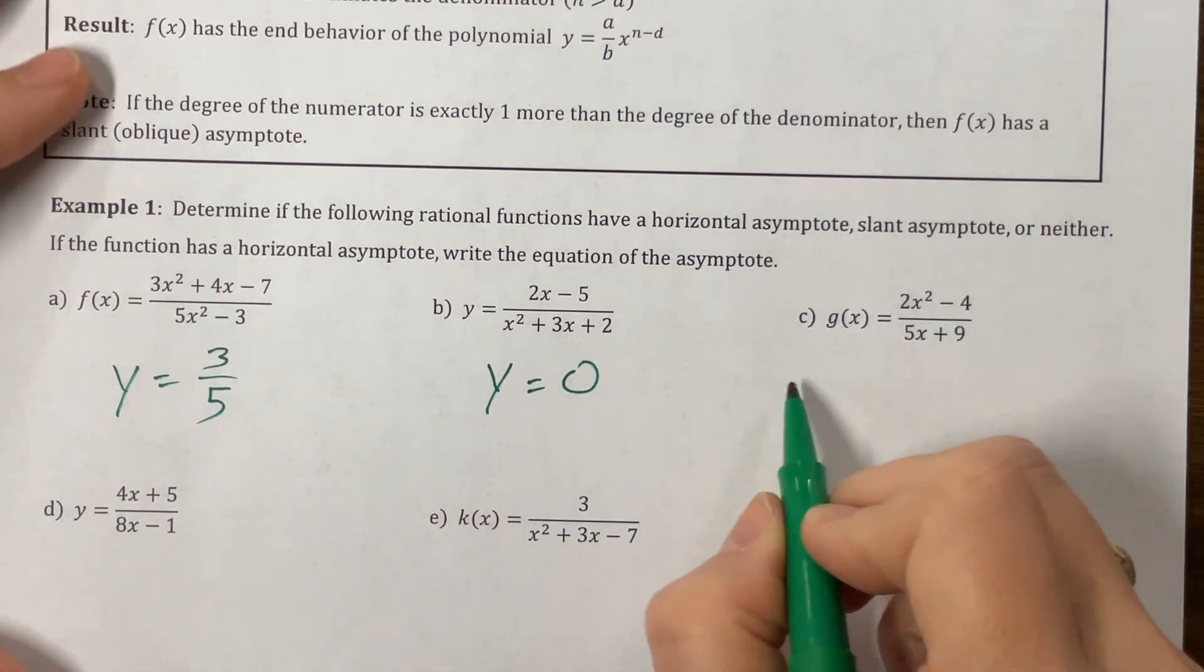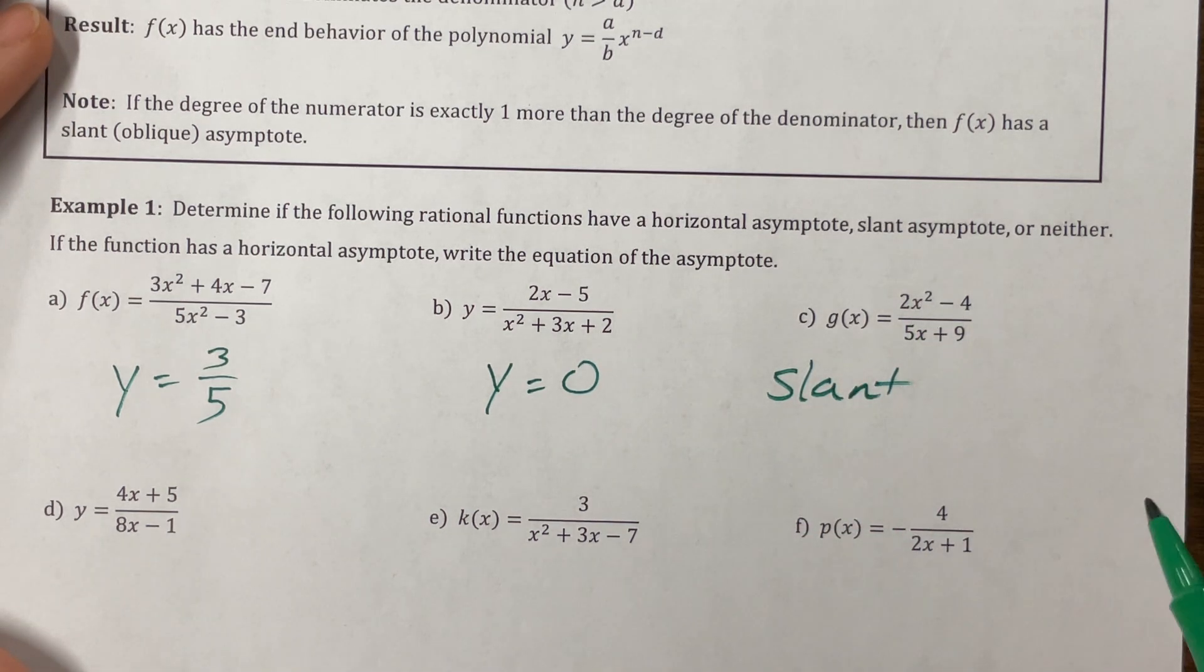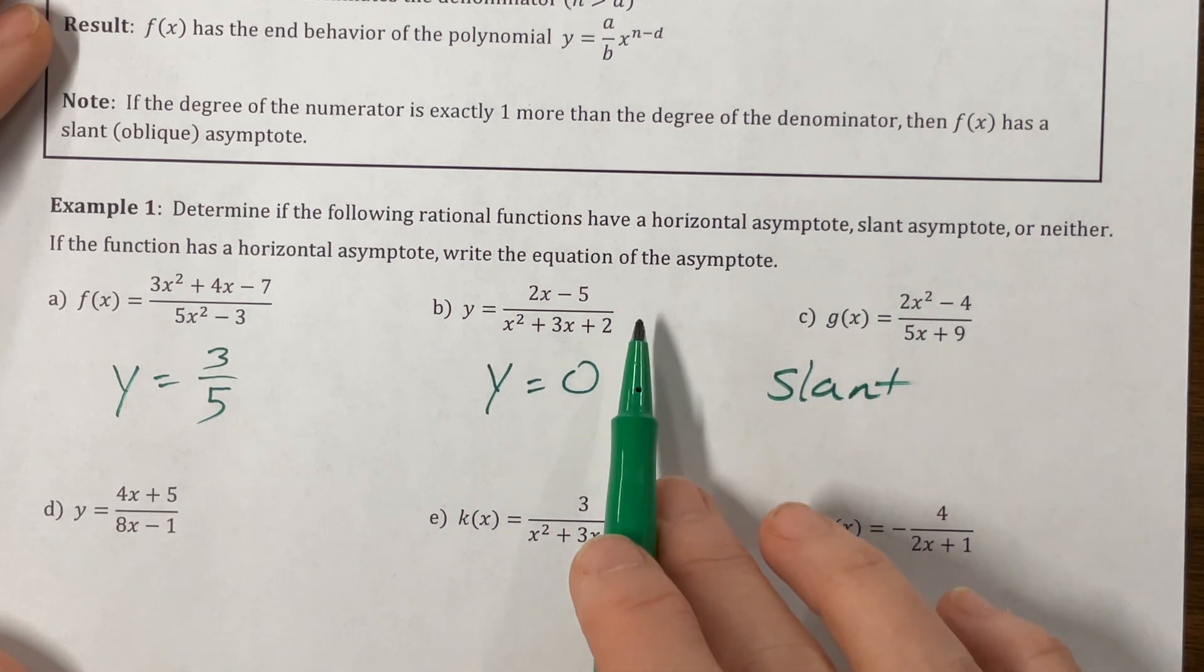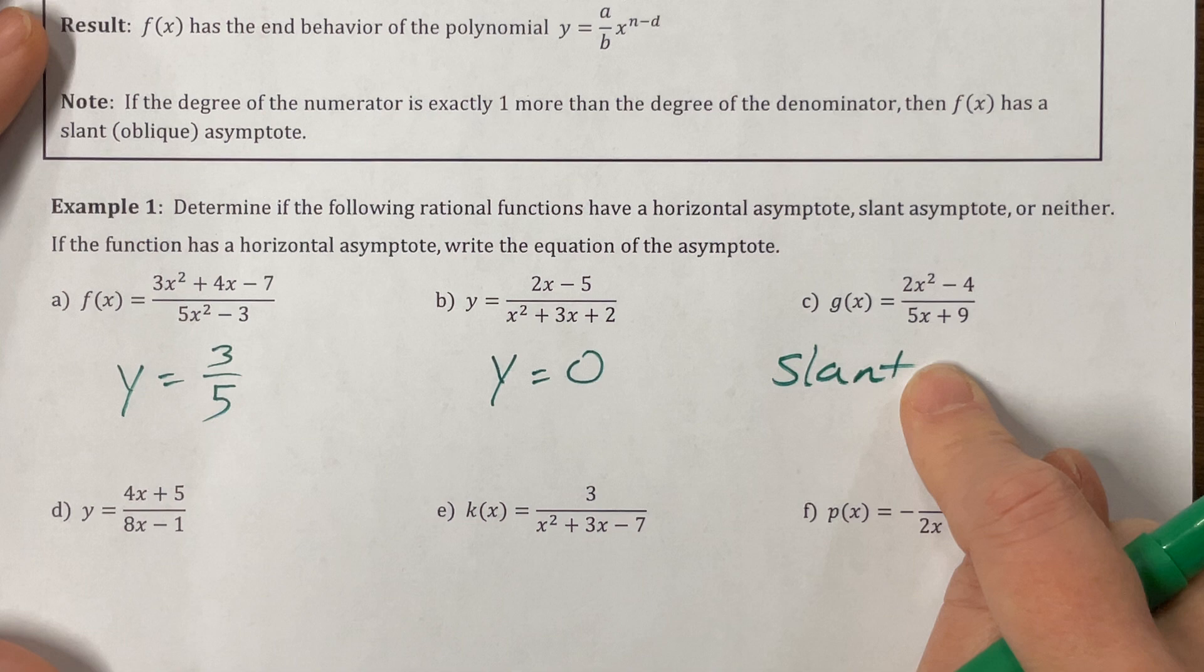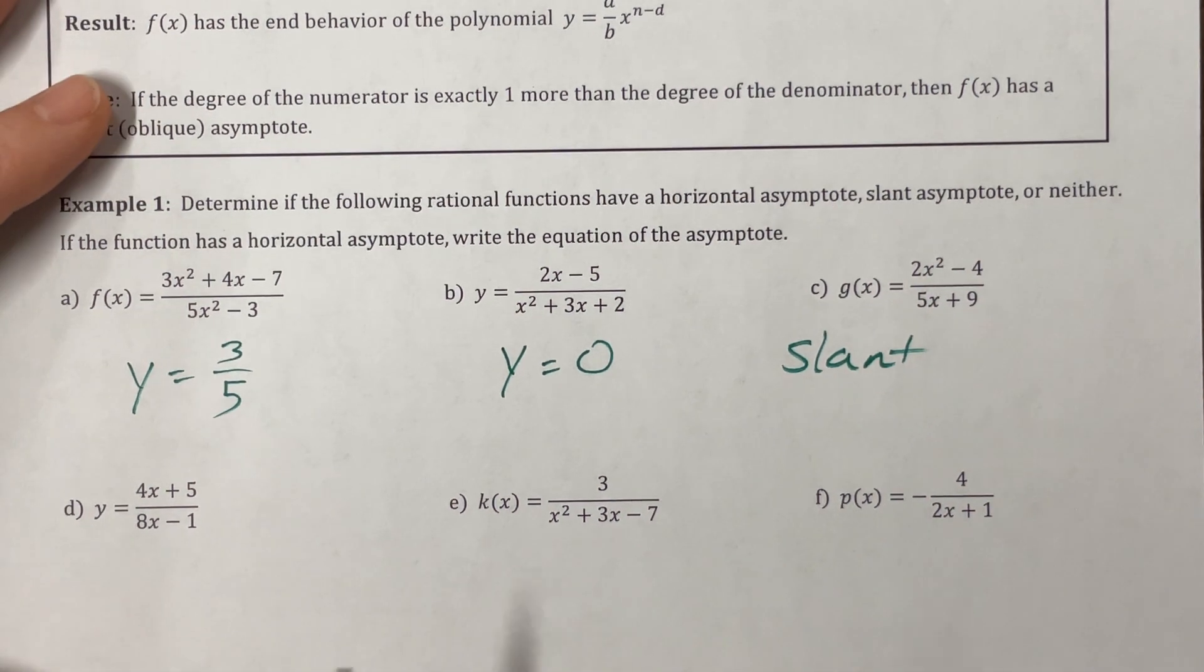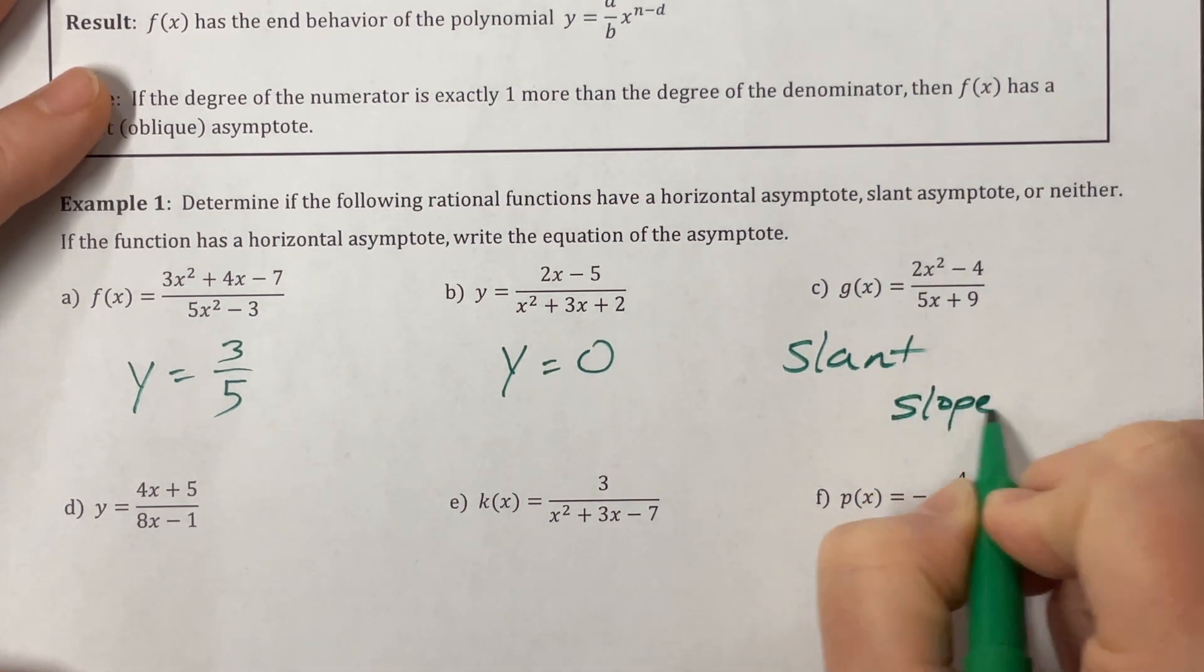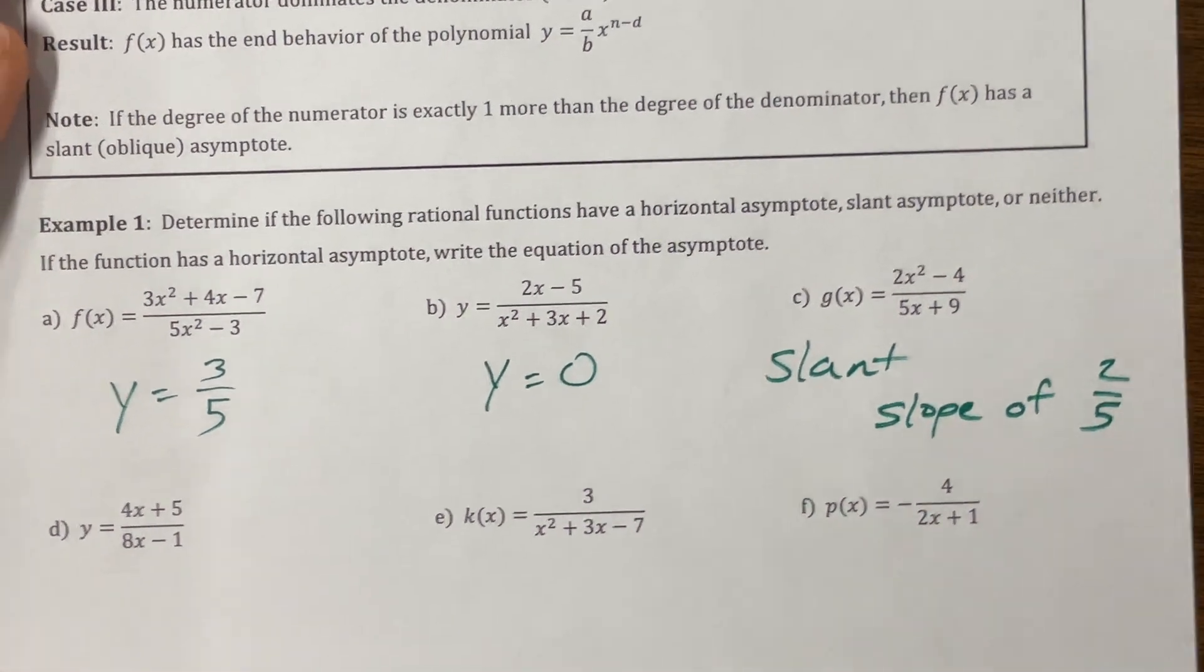This is top heavy. So it has a slant. It's only one degree larger. What does it say? If it's right, the equation, well, we will, I think later, I think it shows up in section 1.11, where we come up with the equation of this. So just for now, we know that it's going to have a slant asymptote. You can do, well, a slant asymptote with a slope of two fifths, which is kind of cool.